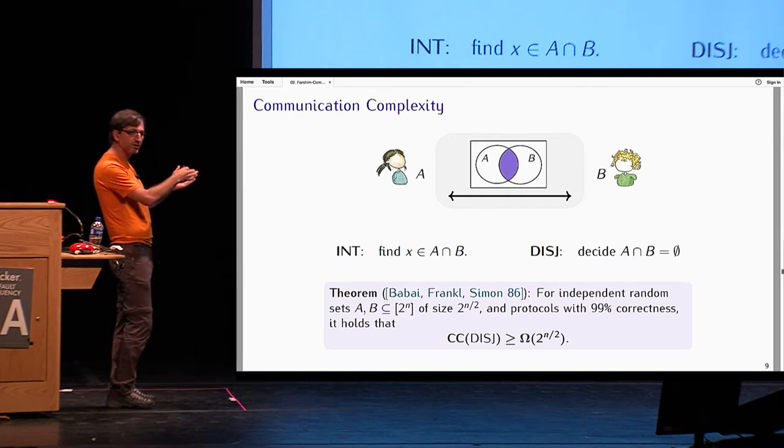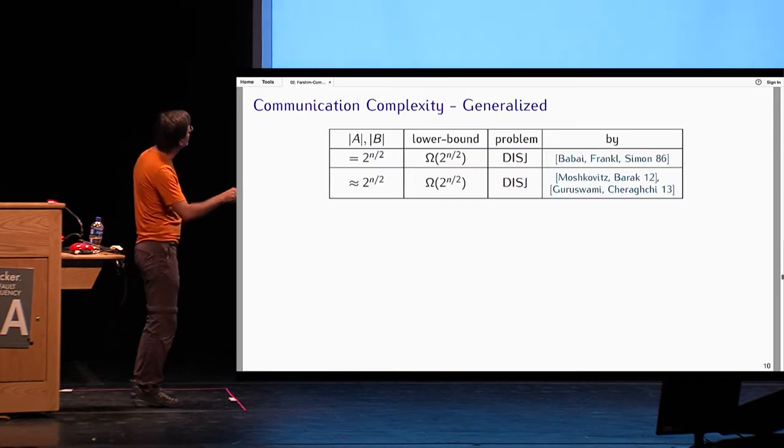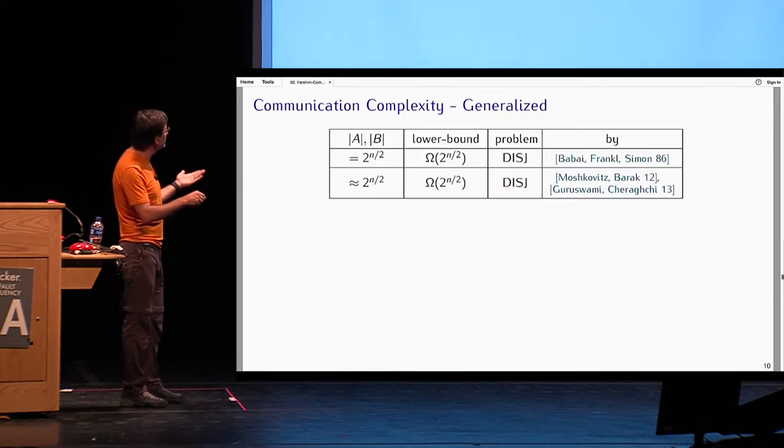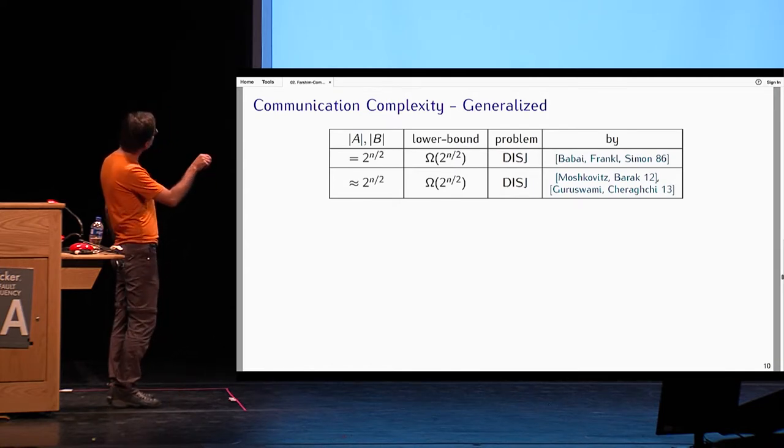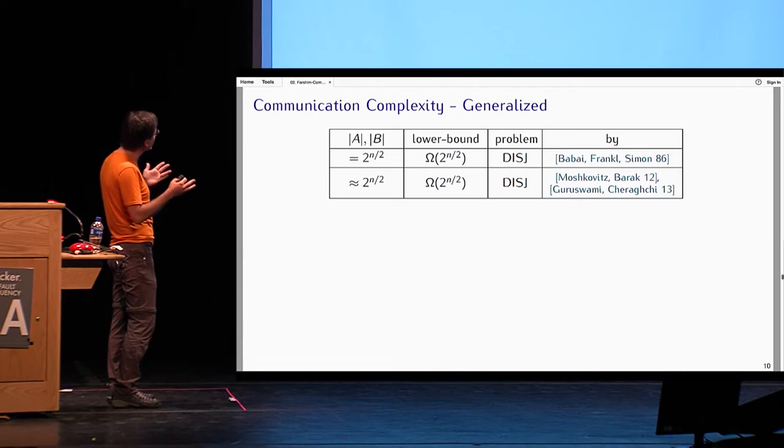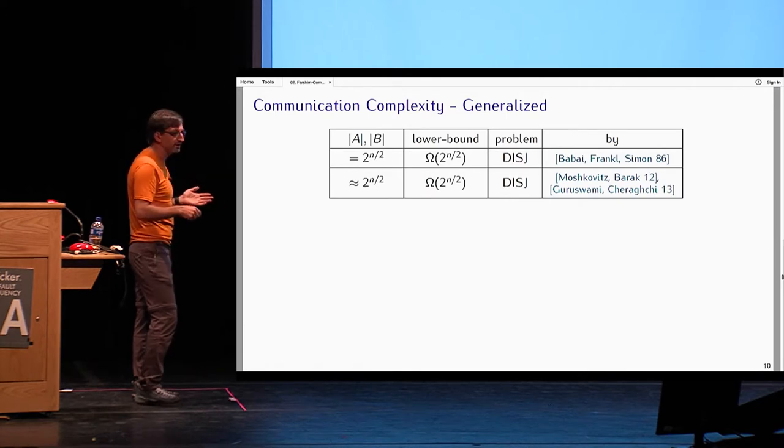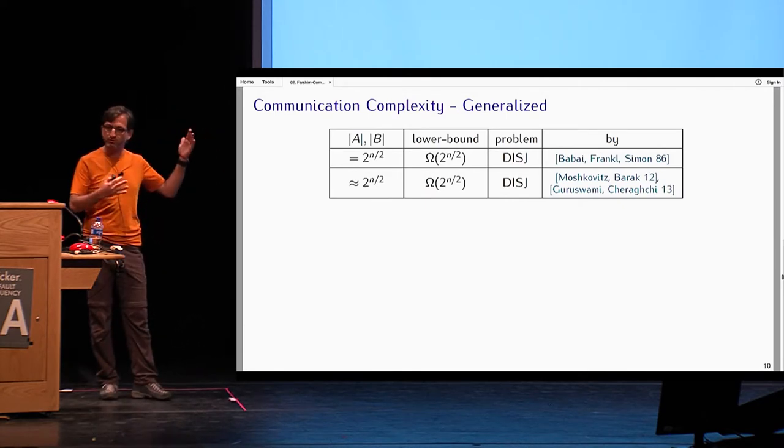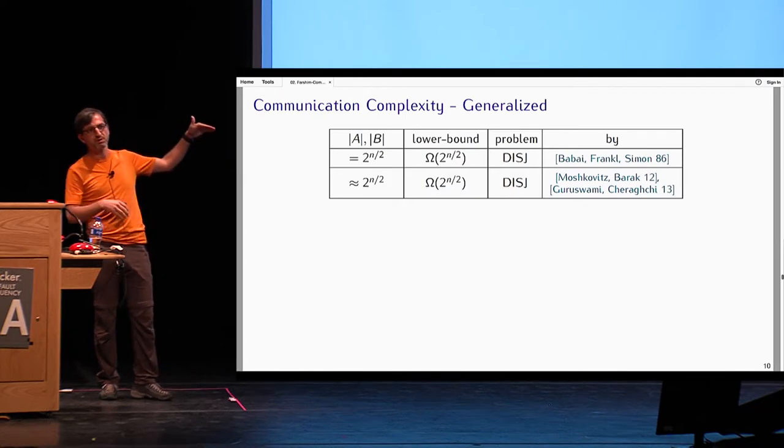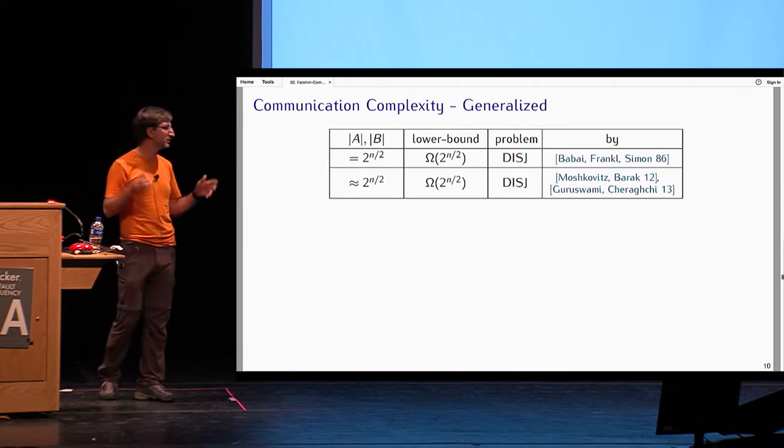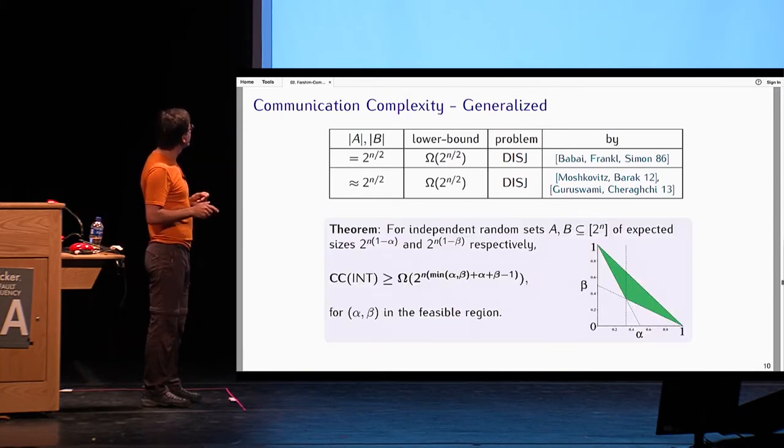This is a very nice result. It actually has a combinatorial proof, kind of tricky, hard to understand. But it restricts the size of A and B to be exactly 2 to the N over 2. This result was taken in communication complexity and extended using information theoretic methods. Simplified versions of these methods appear in lecture notes by Moschkowitz and Barak from 2013, which instead of looking at sets of size exactly 2 to the N over 2, they look at Bernoulli sets of expected size 2 to the N over 2. They prove a similar lower bound. This proof is much more intuitive and easier to understand.